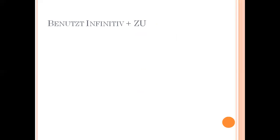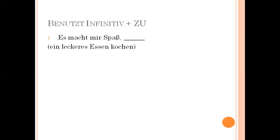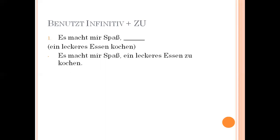Now let's practice combining sentences using infinitive plus 'zu.' First example: 'Es macht mir Spaß' (it gives me fun) combined with 'leckeres Essen zu kochen' (to cook tasty food). Since the subject is already not mentioned in the bracket part, we only need to put 'kochen' at the end of the sentence and place 'zu' before it. The answer is: 'Es macht mir Spaß, leckeres Essen zu kochen' — it gives me fun to cook tasty food.